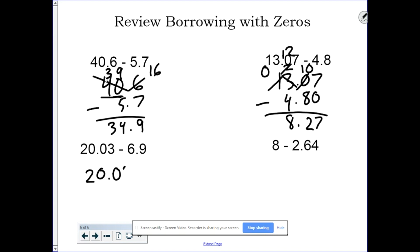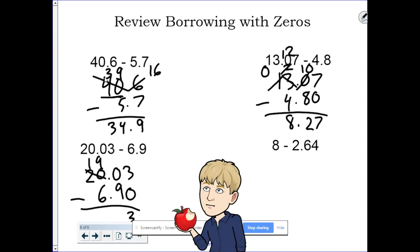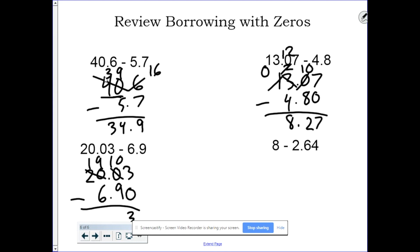All right, let's take a look down here. 20.03 minus 6.9. I lined up my decimal point. I need to fill in that gap. 3 minus 0 is 3. 0 minus 9. I can't do that. Let me borrow from the, uh-oh, I can't borrow from that either. The 20 becomes a 19, and the 0 becomes a 10. 10 minus 9 is 1. 9 minus 6 is 3. 1 minus nothing is 1.